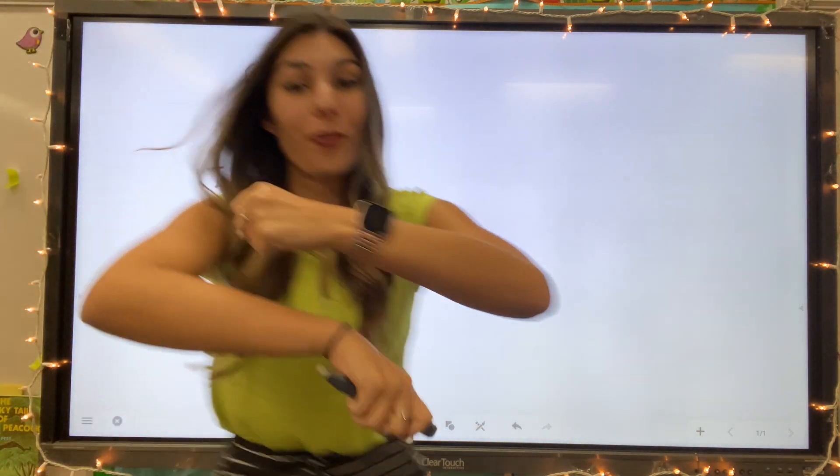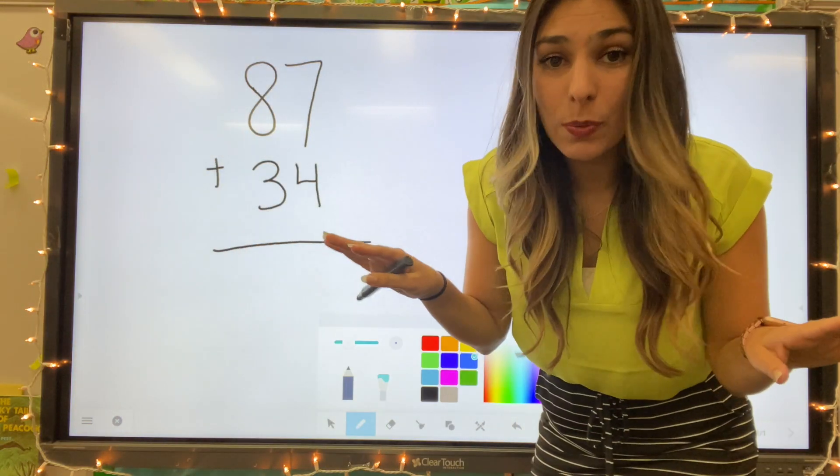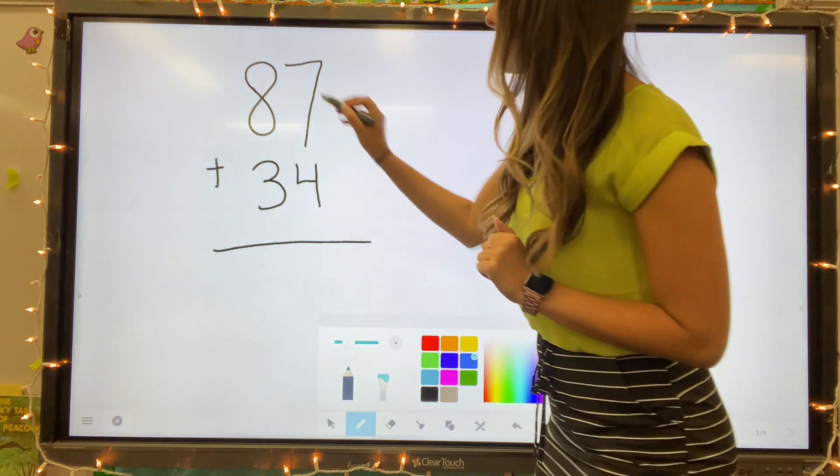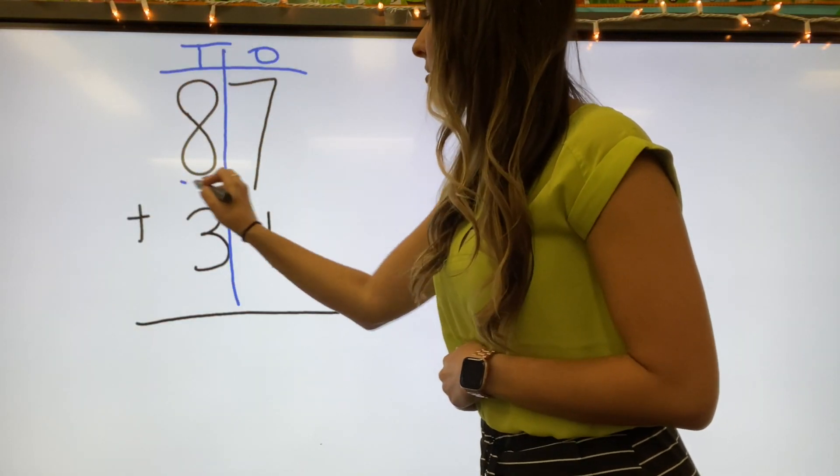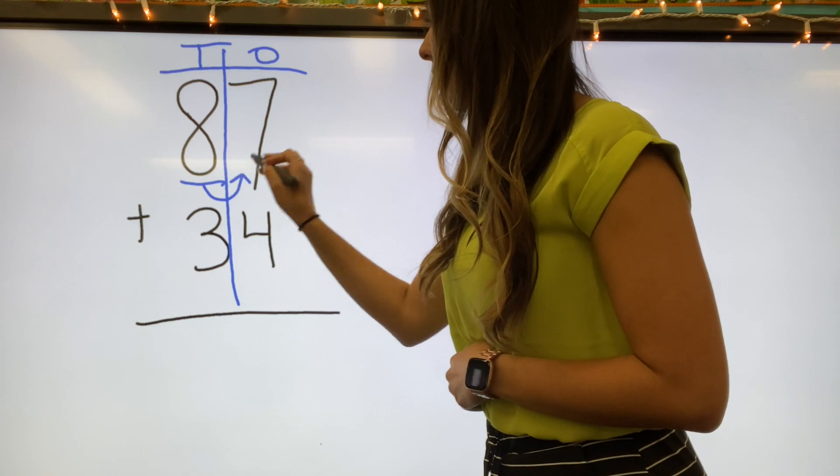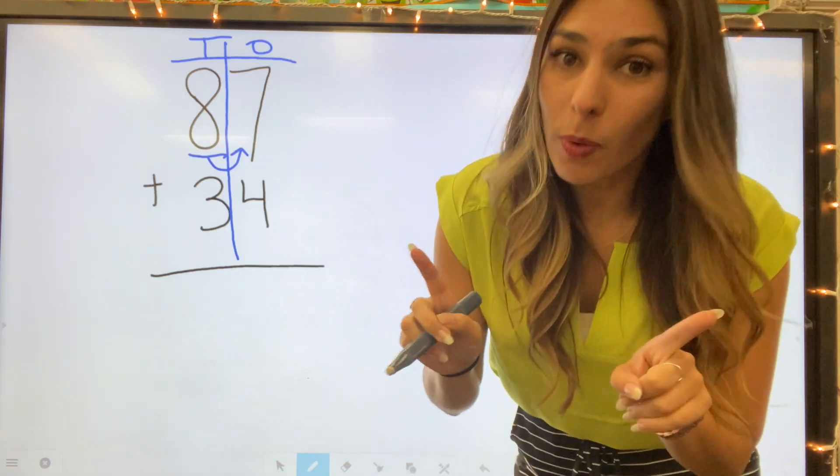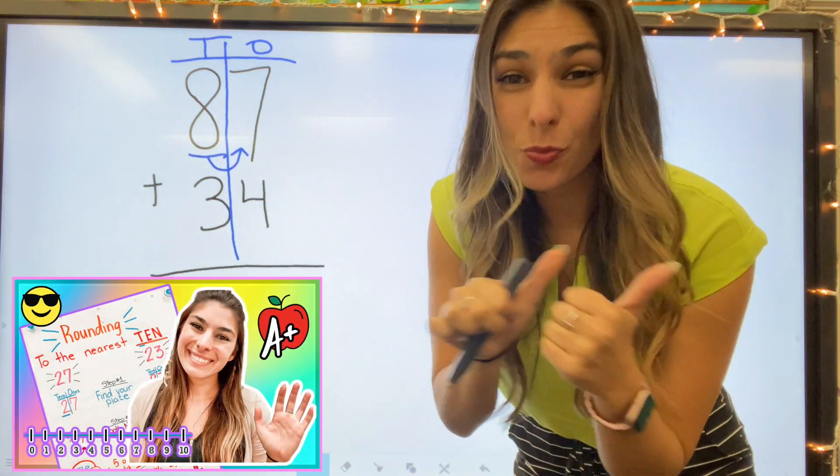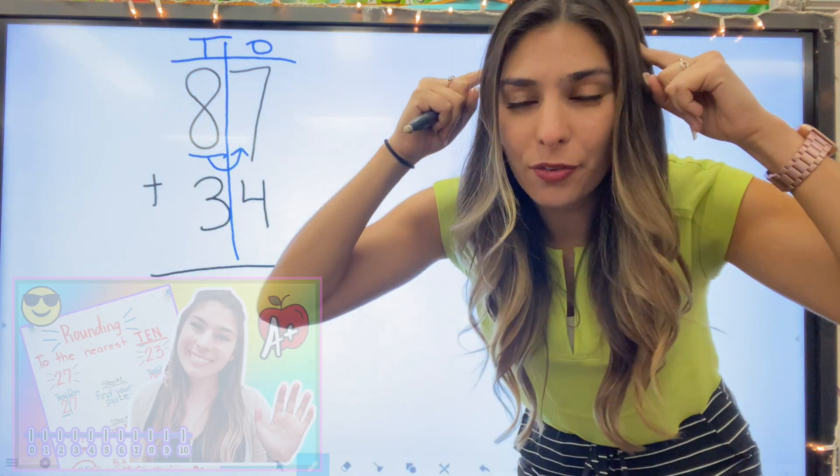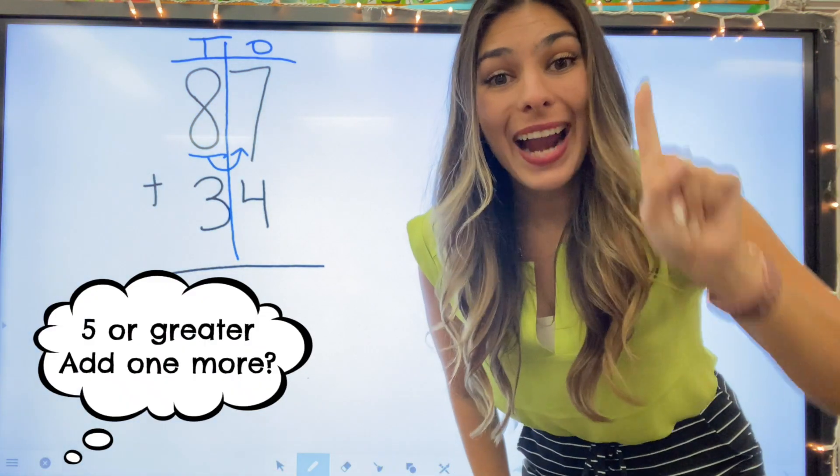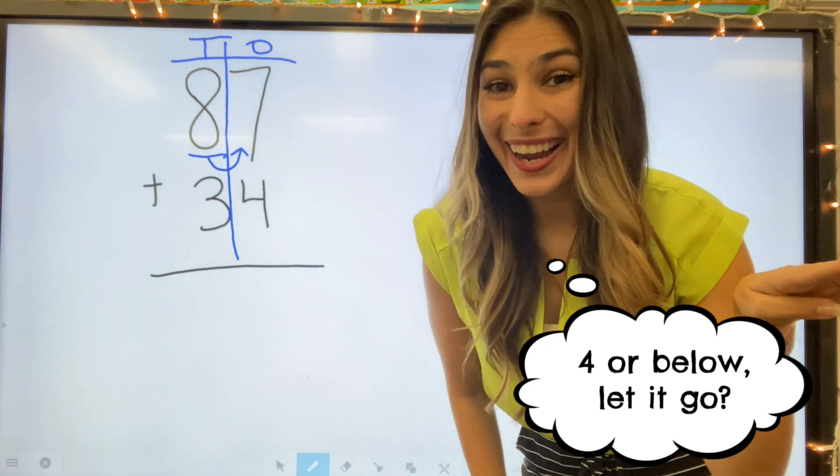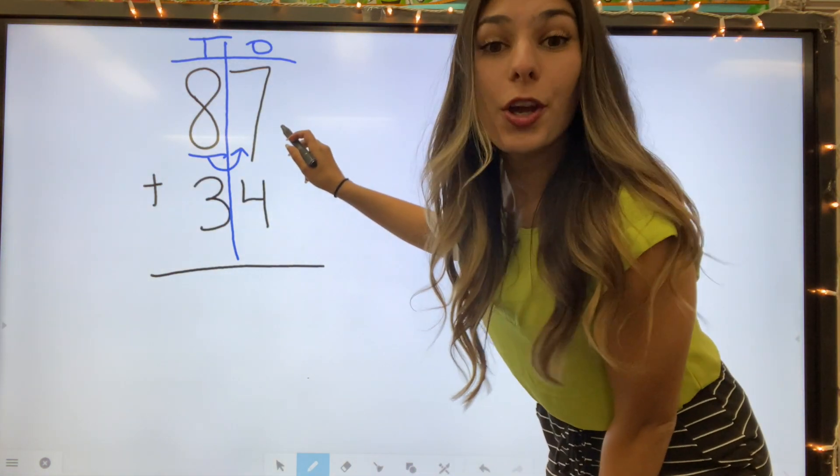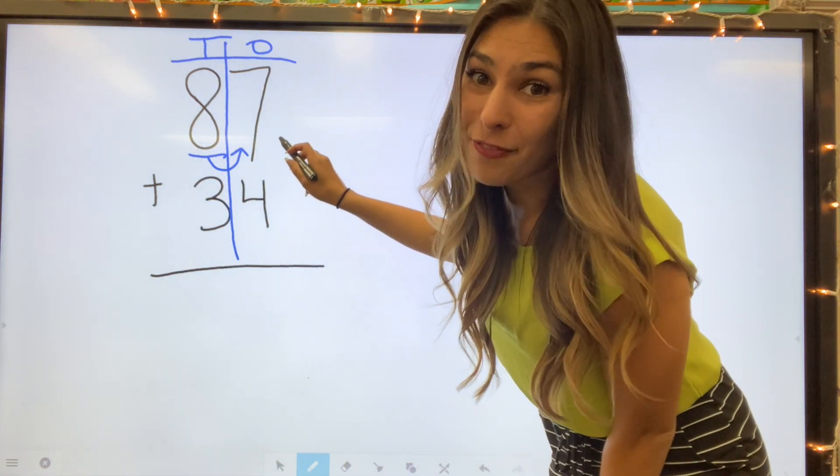Step one, we're going to round each number. So just like we would normally round, I'm going to find my place. I'm going to round to the nearest ten. So I'm going to look at that seven. So one way that we can round, which I taught in the last rounding video, is that I can say this quick little rhyme. Five or greater, add one more, four below, let it go. So is that seven greater than five or less than five?